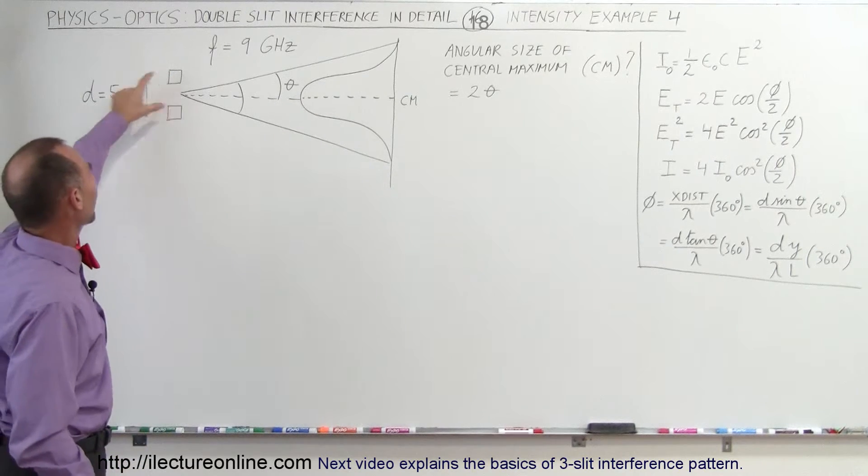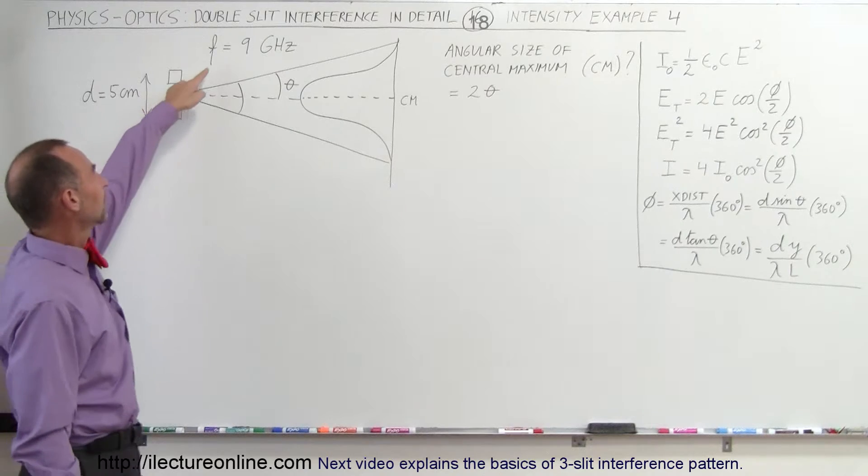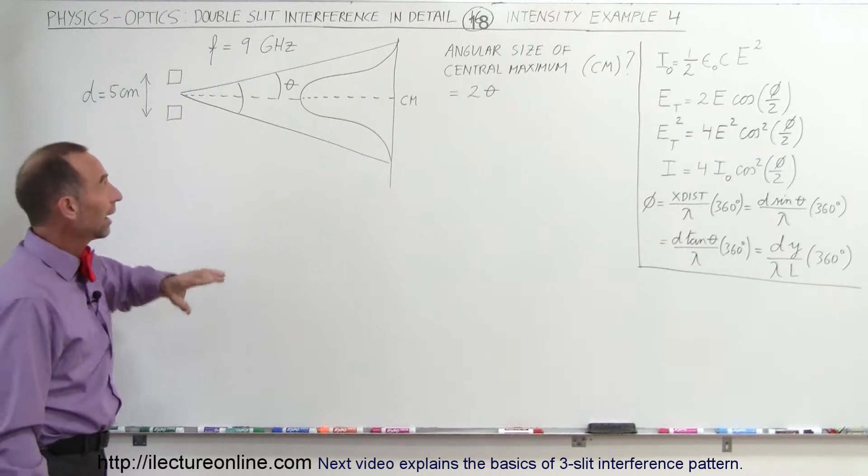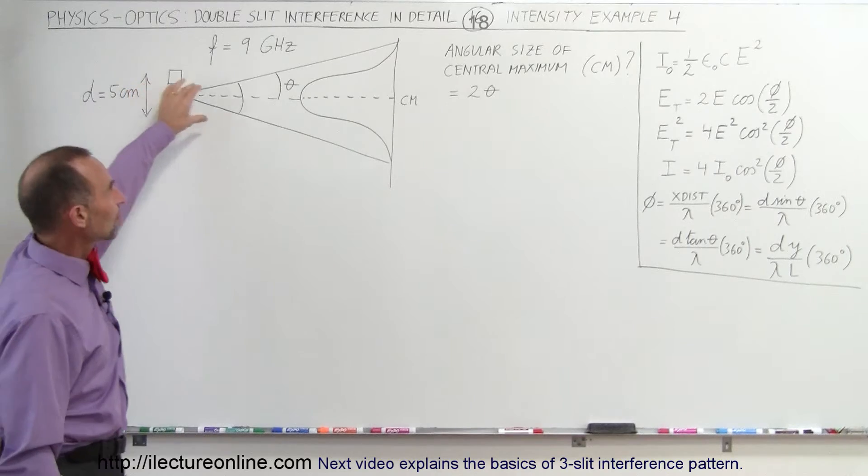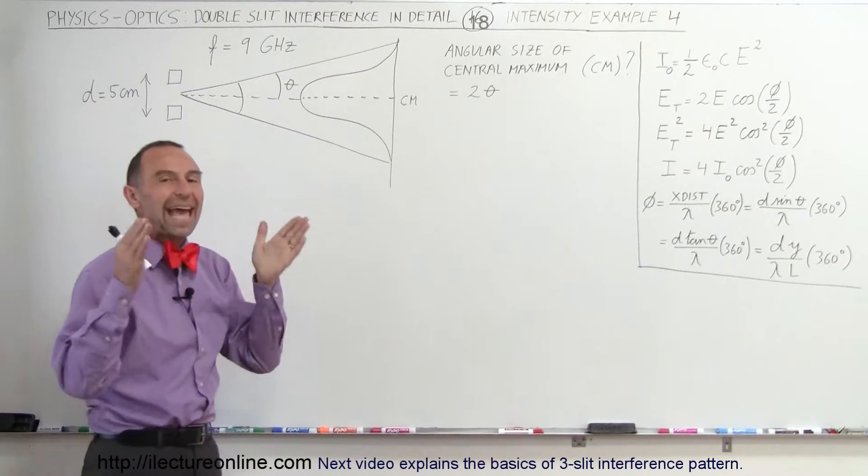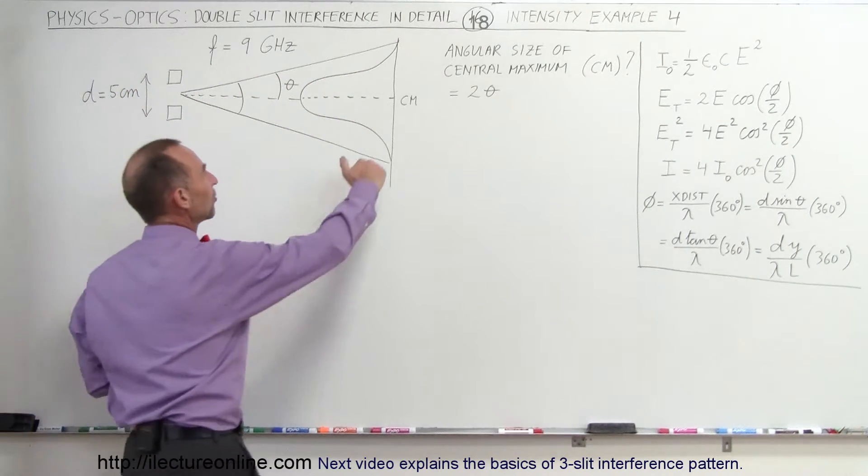So here we have two antennas, they're five centimeters apart and they're emitting a signal at nine gigahertz. We want to know what the central maximum bandwidth is, what is the angular size of the central maximum.